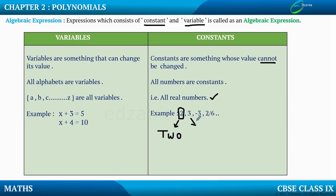Moving to the next example — this number is called as 3. Can I call this number as 10? No. Can I call this number as 20? No. Again, its value is fixed. Similarly, the next number is minus 3, and the next number is 2 by 6. All these numbers have a fixed, independent value. We cannot change it. Therefore, they are said to be constants, and all numbers come in the category of constants.